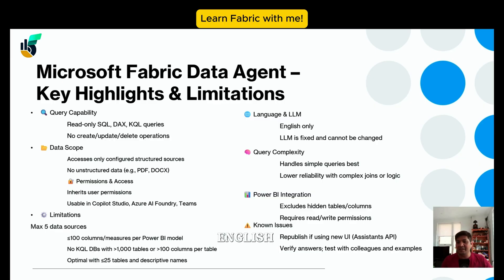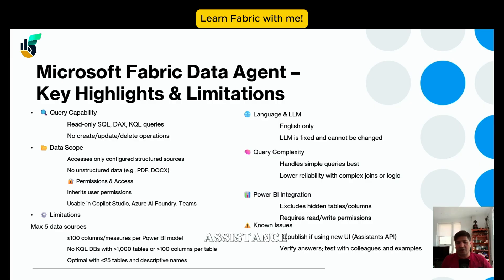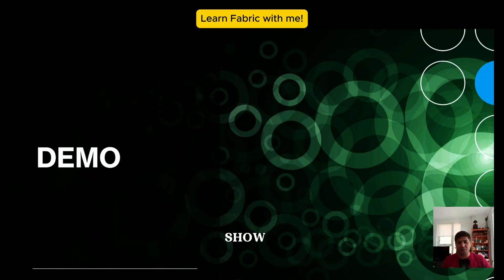In terms of language, only English is supported as of now. Query complexity is limited to simple plain English. If a particular table or column is not part of your semantic model, the data agent will not identify it. There is also a known issue where if you're using it on any UI or Assistance API, you have to republish again and again. Apart from these limitations, it works really well — let's start the demo.